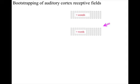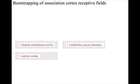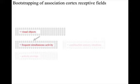Effective receptive fields can again develop through experience from these starting points. And genetically defined biases on connectivity can also aid the development of receptive fields in the association cortex.